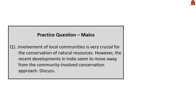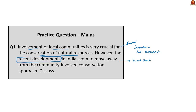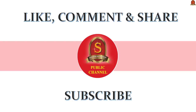The practice mains question is: 'Involvement of local communities is very crucial for the conservation of natural resources. However, the recent developments in India seem to move away from the community-involved conservation approach. Discuss.' For the first part, mention the importance of local communities and some international conventions that stress this fact. For the second part, mention the points discussed under recent developments — Third National Wildlife Action Plan, 2018 draft National Forest Policy, Supreme Court order, proposed amendments to the Indian Forest Act and Wildlife Protection Act — to show India is moving away from community-involved conservation.